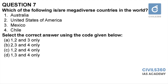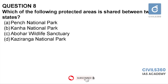Question number seven: which of the following are mega diverse countries? One: Australia. Two: USA. Three: Mexico. Four: Chile. The identified mega diverse countries include the USA, Mexico, Colombia, Ecuador, Peru, Venezuela, Brazil, Democratic Republic of Congo, South Africa, Madagascar, India, Malaysia, Indonesia, Philippines, Papua New Guinea, China, and Australia. Chile is not part of this group. Therefore the answer is option A, one, two, and three.